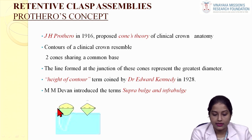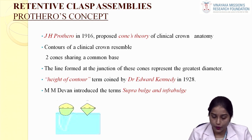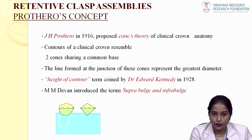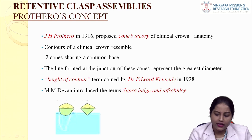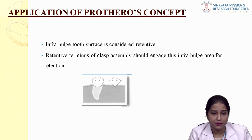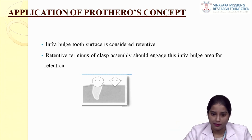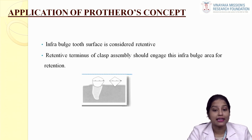The infrabluge area is going to help in retention because it will be occupied by the clasp assembly. When the clasp assembly engages this infrabluge area, that provides retention. So when studying the clasp assembly, we should keep in mind that the infrabluge area helps in retention and will be engaged by the clasp assembly.